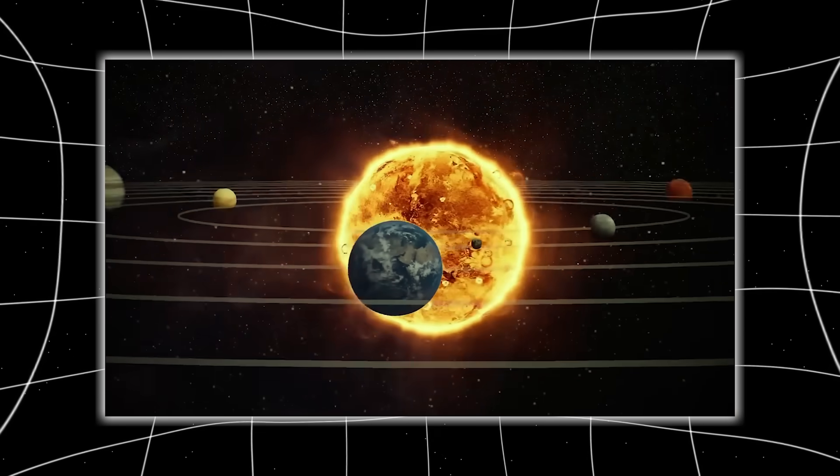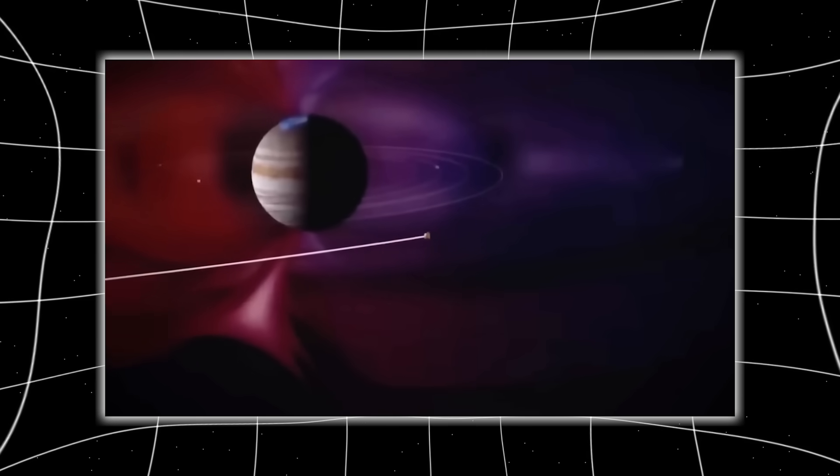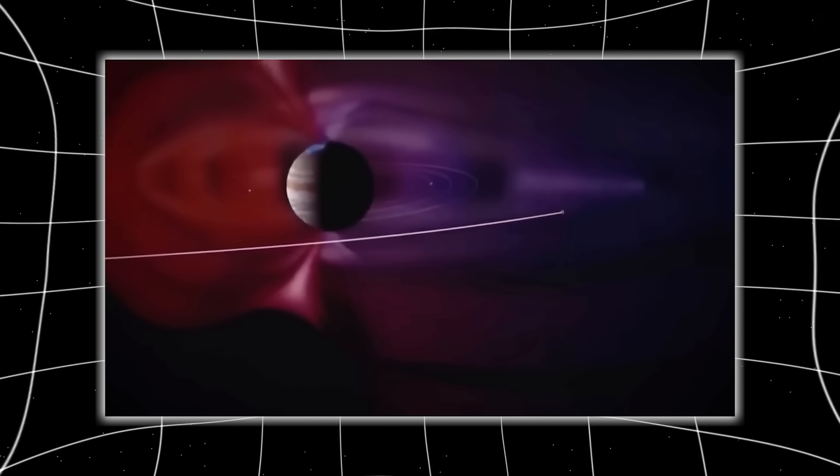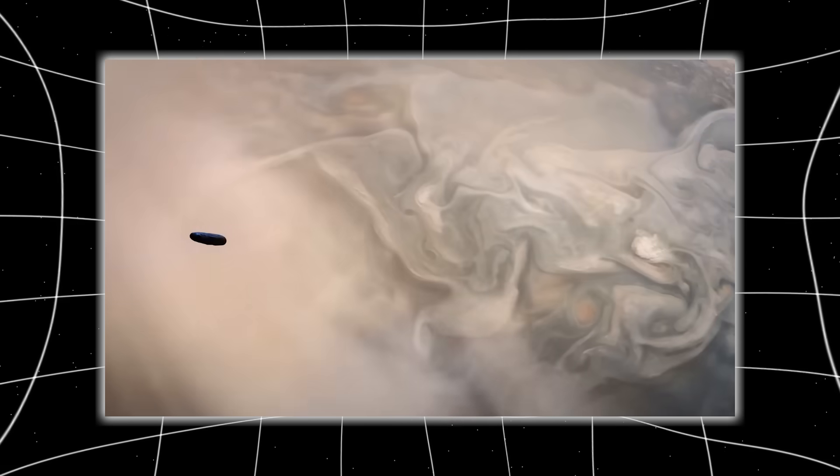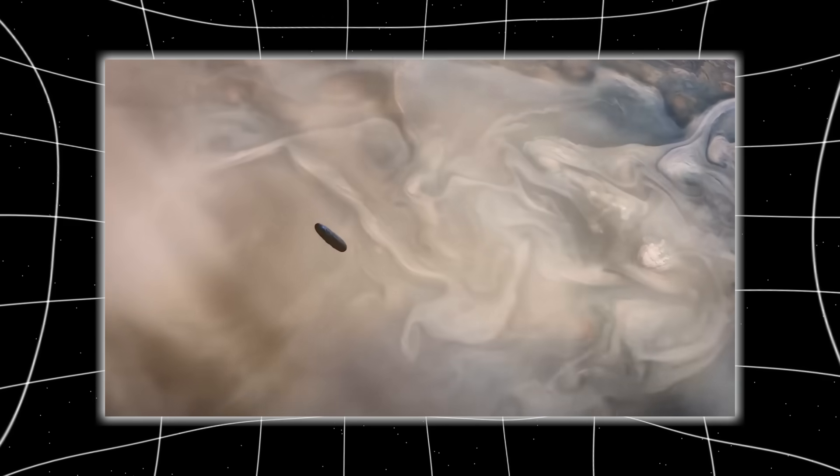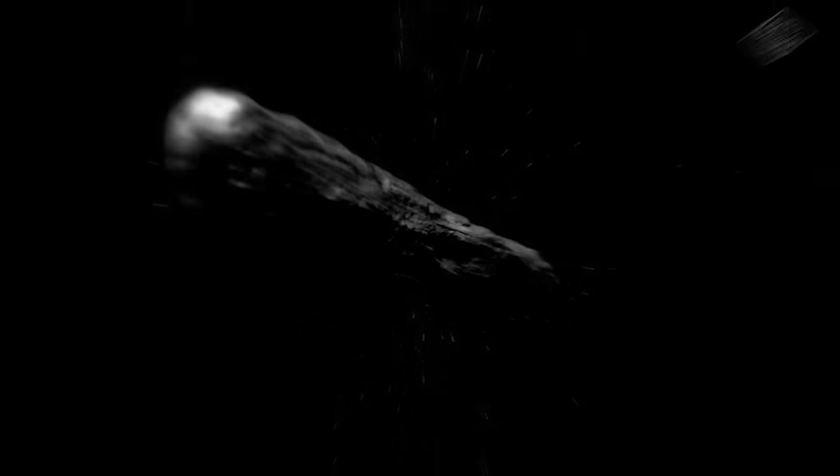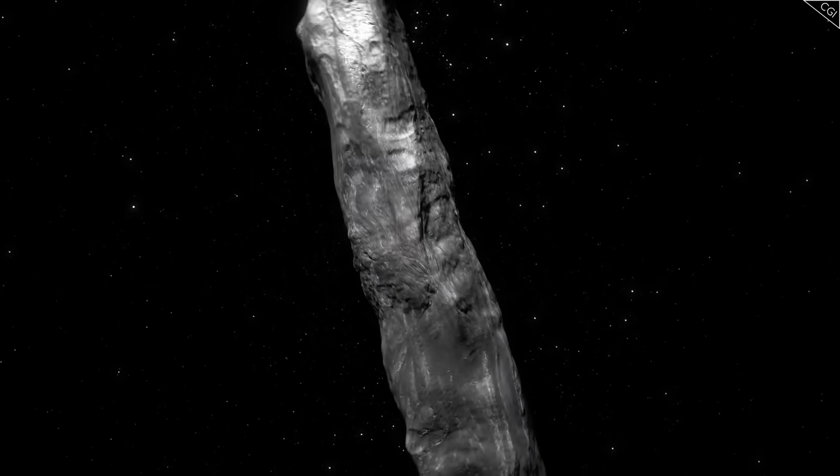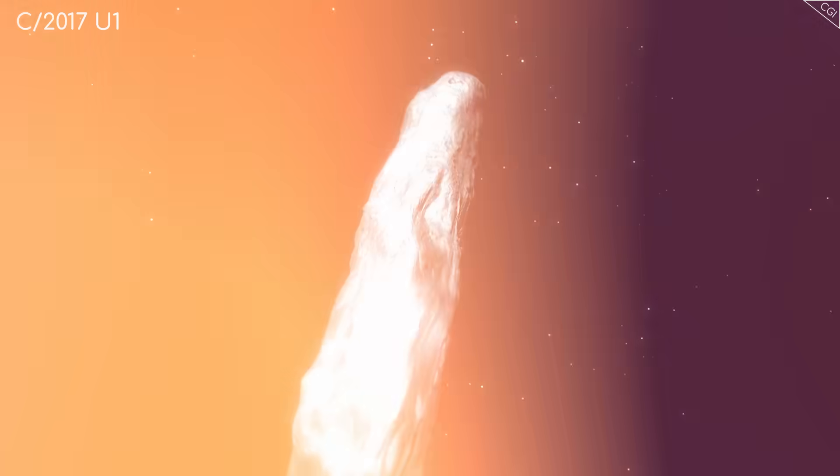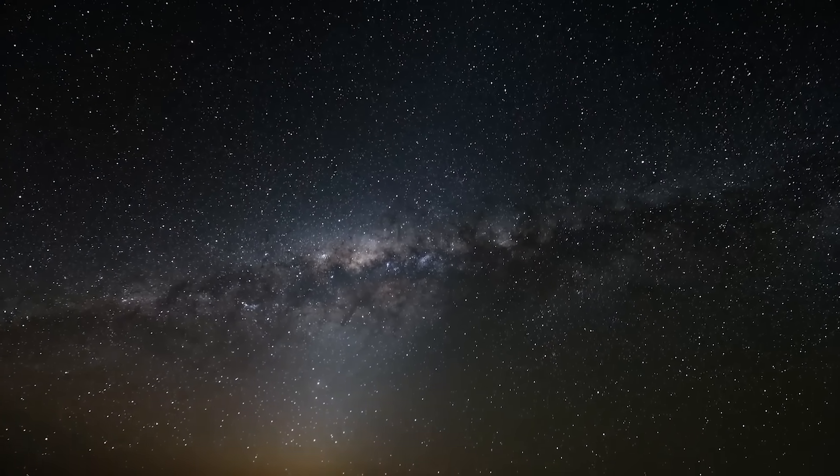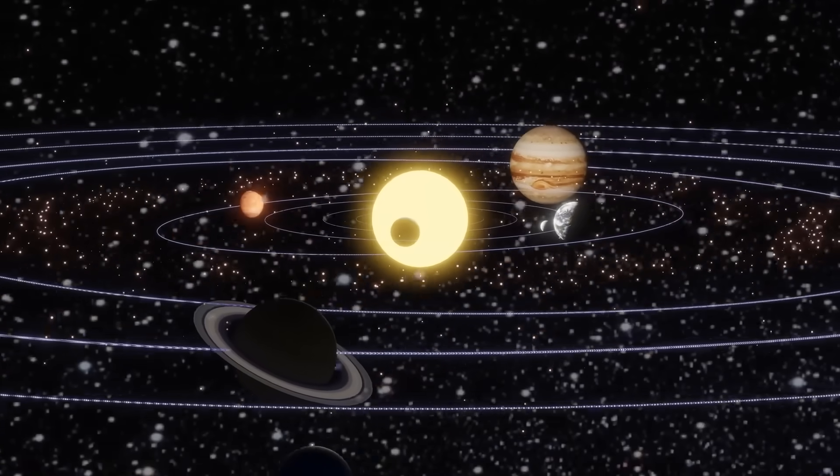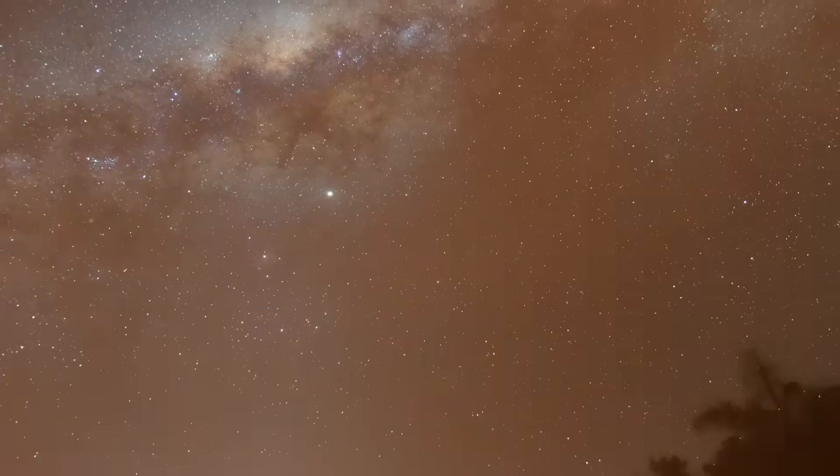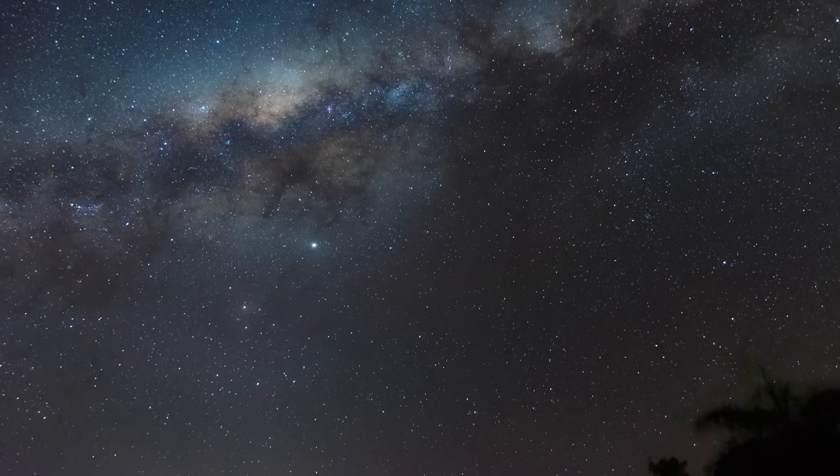But the timing was suspicious. Just days earlier, 3I Atlas had vanished behind the sun, and independent astronomers began reporting small deviations in its expected position. It was supposed to reappear along a predictable arc. Instead, the math stopped working. Avi Loeb, Harvard astrophysicist and author of the Loeb Scale, had already rated 3I Atlas a 4 out of 10 on the likelihood of being artificial. Then, after these new anomalies, the IAWN quietly upgraded it to a priority target. Hundreds of telescopes were redirected to track it, as if Earth itself was preparing for something we weren't supposed to see coming.